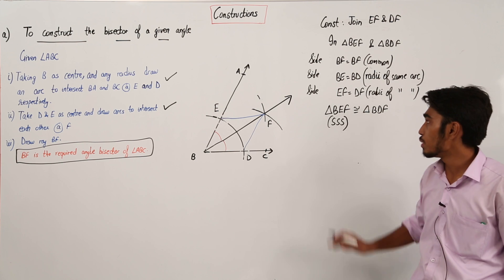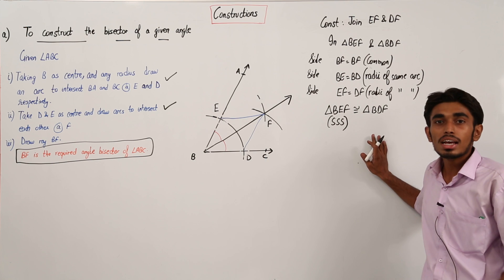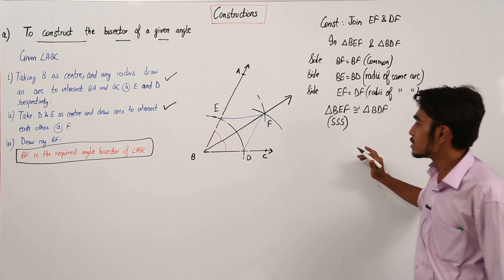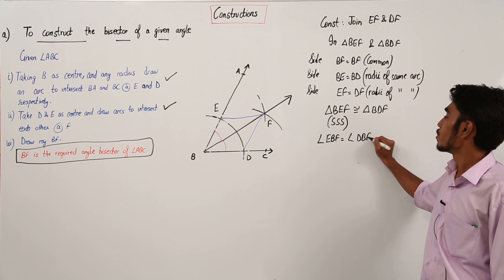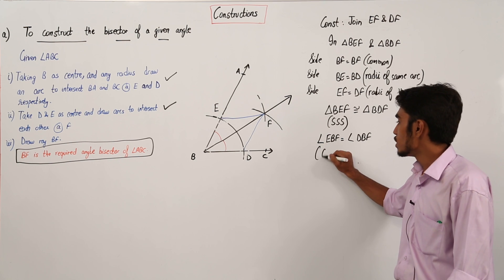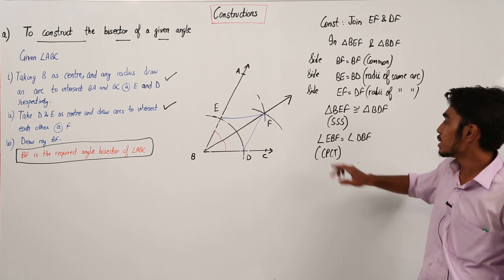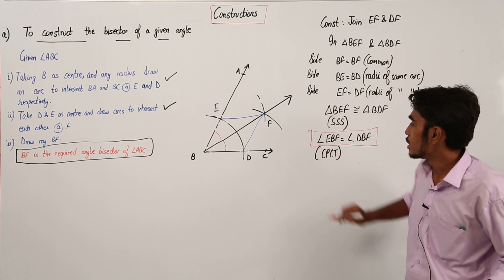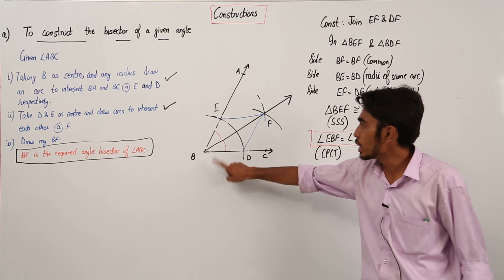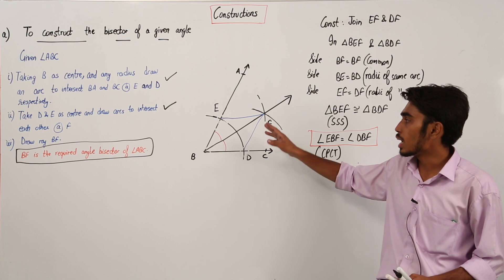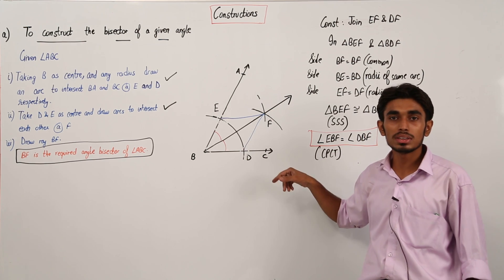We know from the chapter on triangles that when two triangles are congruent, all the angles of one triangle are equal to the corresponding angles of the other. So I can say that angle EBF is equal to angle DBF, by CPCT — corresponding parts of congruent triangles. So both angles are equal to each other, and by drawing BF we have bisected angle ABC, dividing it into two equal parts. This was the required construction, and we have also done the proof which shows that BF has divided angle ABC into two equal angles.